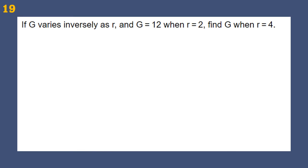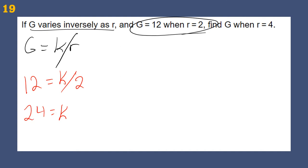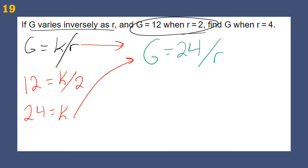If G varies inversely as R, then G equals K divided by R (not K times R). We're given that G equals 12 when R equals 2. Multiply both sides by 2 and we get K equals 24. So our equation is G equals 24 over R. To find G when R is 4: G equals 24 divided by 4, so G equals 6.